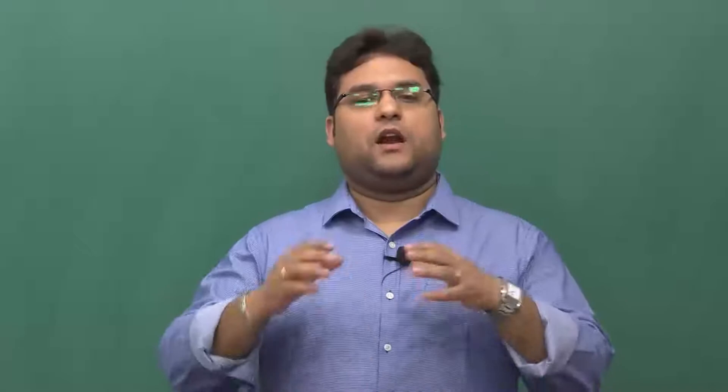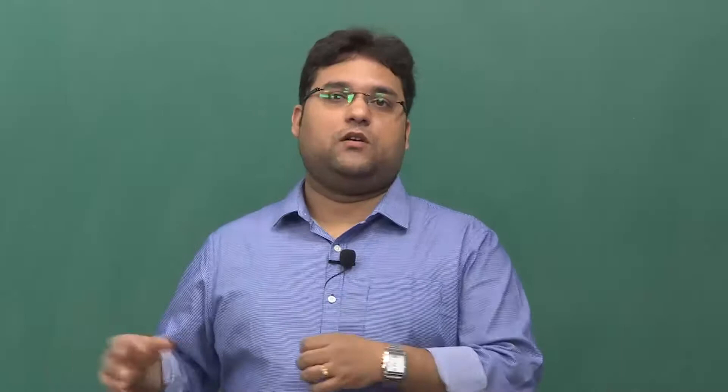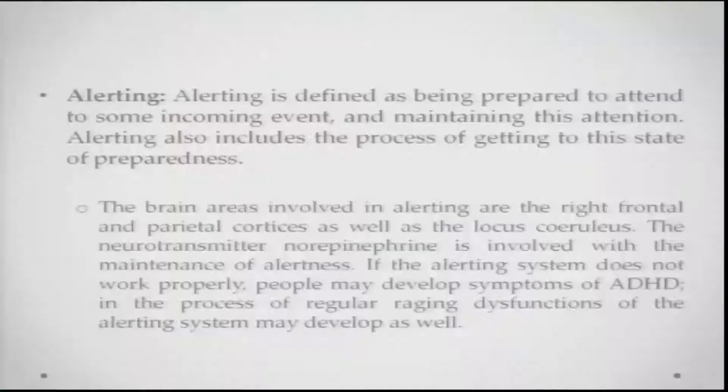The brain areas involved in alerting are the right frontal and parietal cortices as well as the locus coeruleus. The neurotransmitter norepinephrine is also found to be involved with the maintenance of alertness. If the alerting system does not work properly, people may develop symptoms of attentional deficit hyperactivity disorder (ADHD) — a condition involving dysregulation of alerting systems, making it very difficult for people to concentrate on specific things.